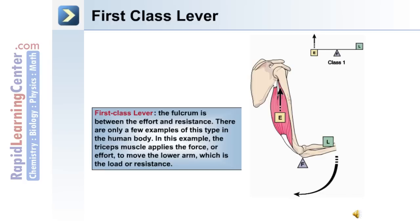In a first-class lever, the fulcrum is between the effort and the resistance. This is depicted in the image on the right side of the slide. There are only a few examples of first-class levers in the body. In this example, the tricep muscle produces the effort to move the lower arm, which is the load or resistance. The elbow is the fulcrum.